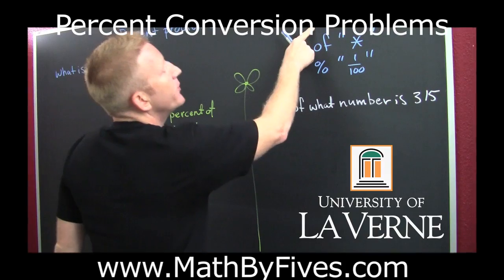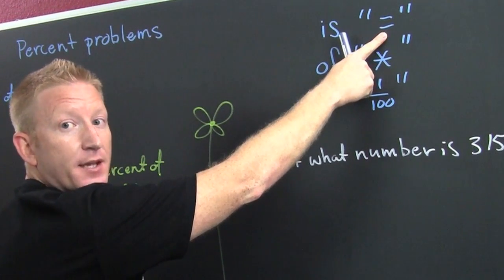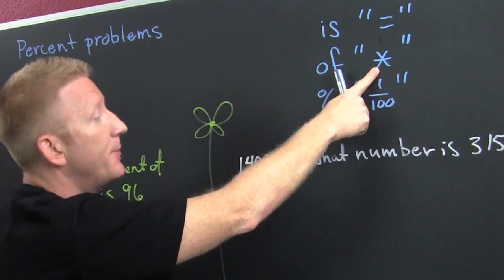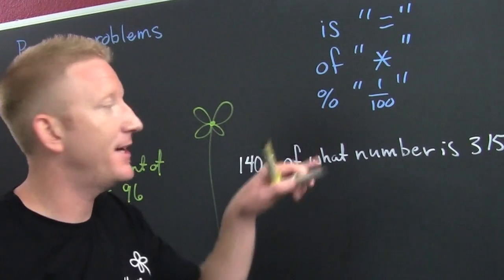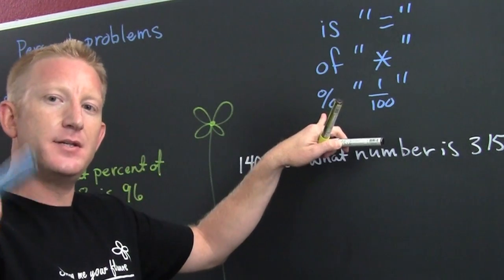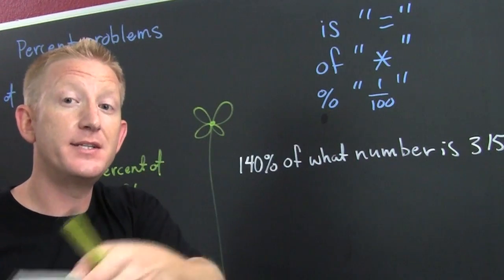What do we need to know? We need to know is is equal. We need to know of is times. And we need to know percent is one over 100. Anyway, that last part will kind of just go by that because we know how to do percents. Just go to that one spot in the back of your head or go to my percent to decimal video.